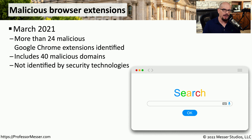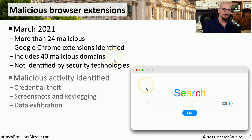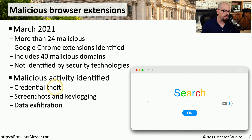This is a very practical concern. In March 2021, a study found that more than 24 Google Chrome extensions contained malicious software. This included 40 malicious domains, and none of it was identified by any antivirus, anti-malware, or other security software. When these extensions were installed, researchers immediately found credential theft, screenshots, key logging, and data exfiltration.